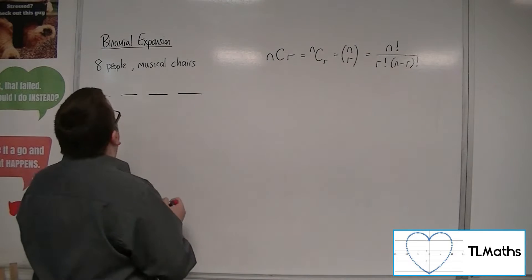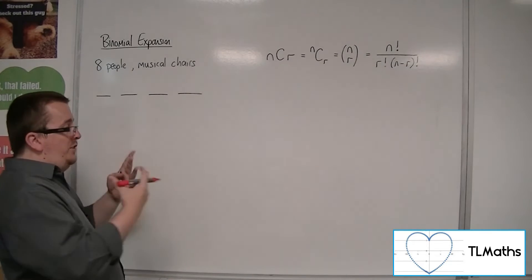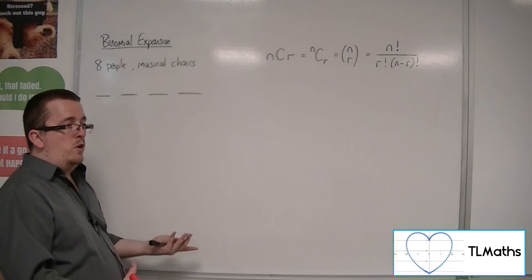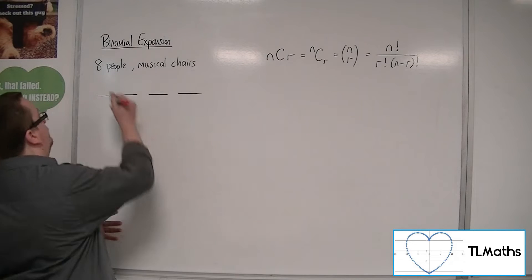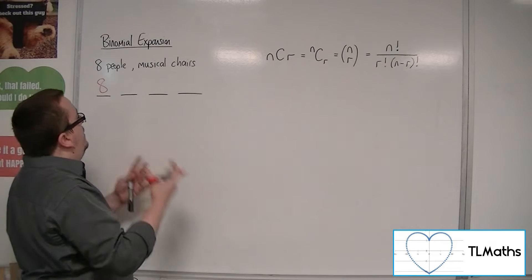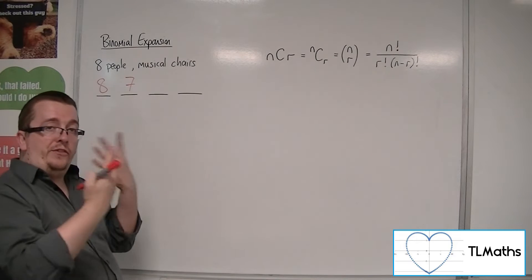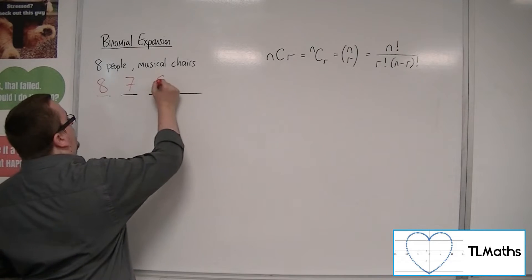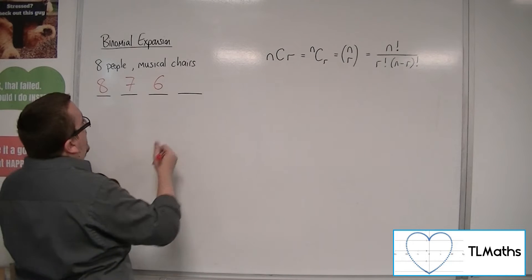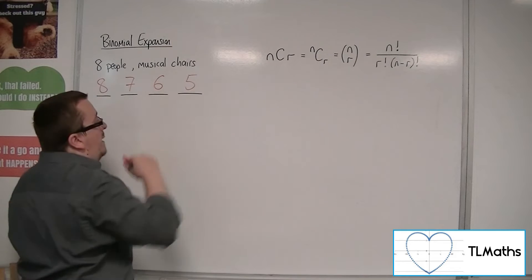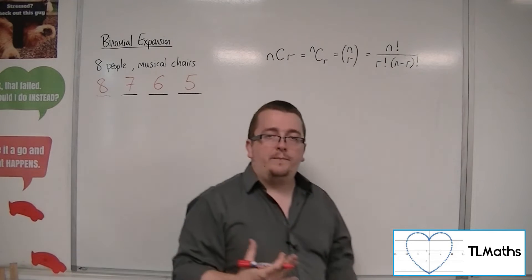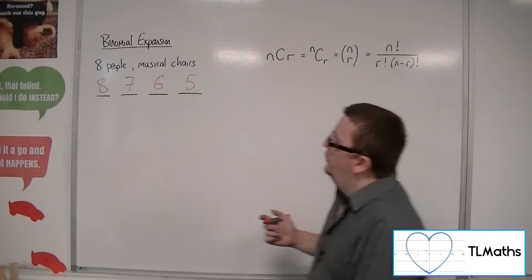In other words, I would have eight people to choose from to sit in the first chair, and then I would have seven remaining to sit in the second chair, six remaining to sit in the third chair,